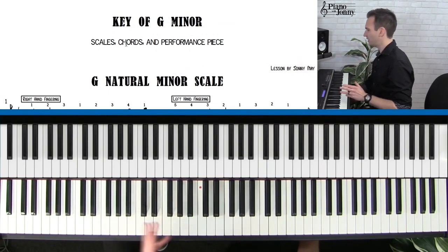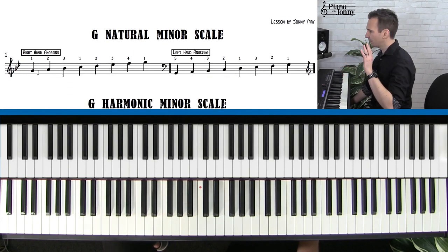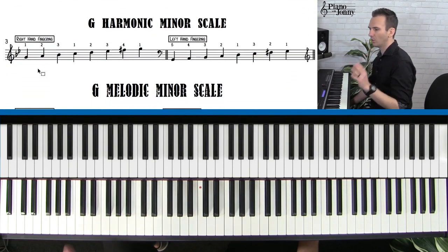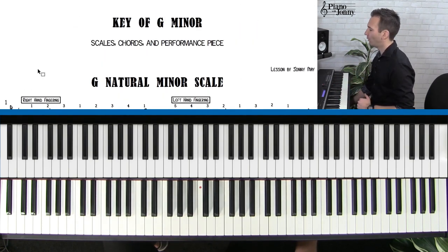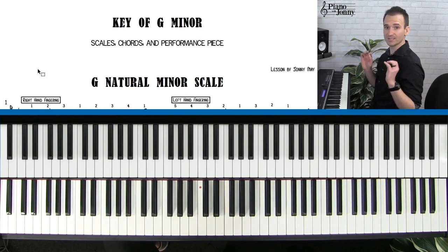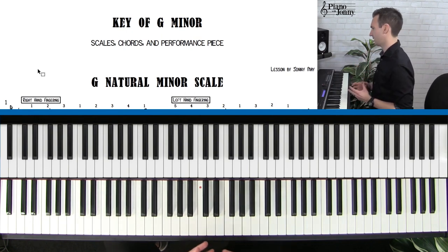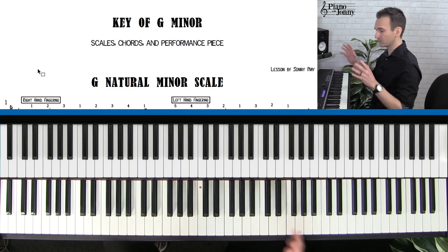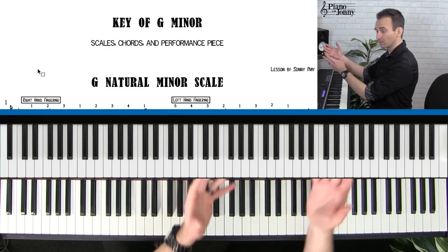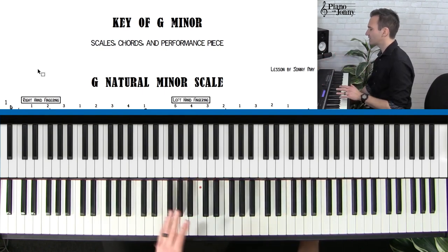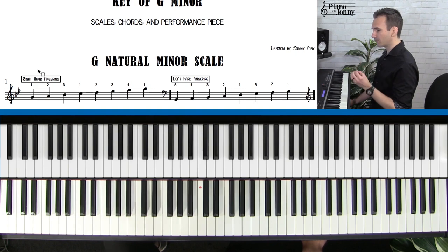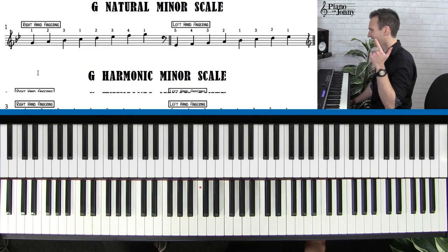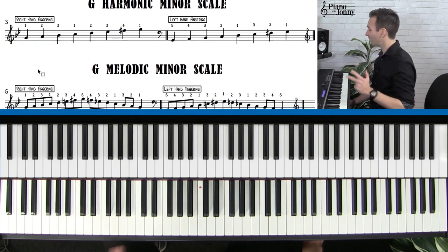Let's talk about the key of G minor. You're going to be learning a ton — the scales, the chords, and a really fun song. But the most important thing whenever you're learning a key is you've got to know the scale, because all the chords come from the scale, and usually the melody notes in the key of G minor will use notes from the G minor scale. So we're going to start with the fingering, and you're going to learn all three scales today — natural minor, harmonic minor, and melodic minor.